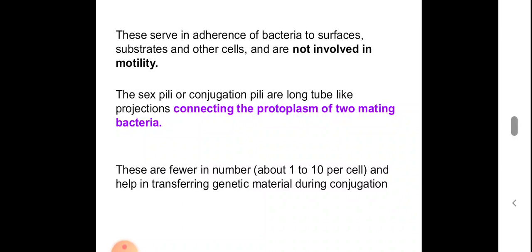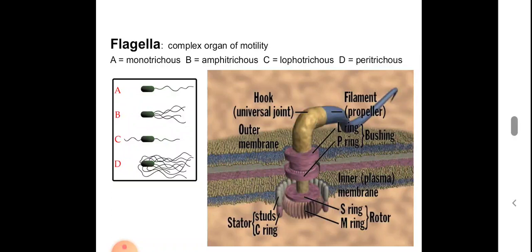Next, about flagella. Flagella are complex structures involved in motility. According to the number and position of flagella present, we can group bacteria into different classes: if there is only one flagellum, it is monotrichous; if there are a large number from one end, it is amphitrichous; if there is one flagellum on both poles of the bacteria, it is lophotrichous; and if there are a large number of flagella all over the cell body, it is peritrichous.